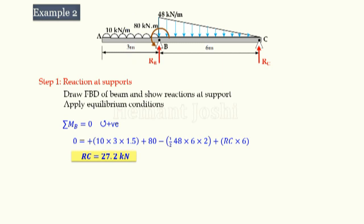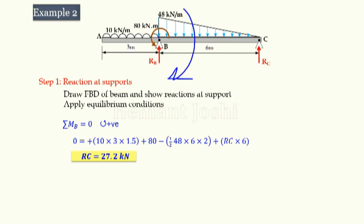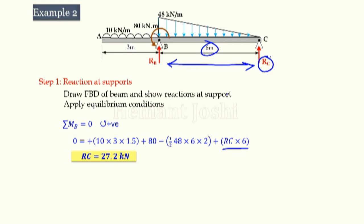Second is the couple of 80 kN·m, taken as positive because of its anticlockwise nature. Third is the triangular load (uniformly varying load). Total triangular load is taken as area of the triangle: 1/2 × intensity × distance. It acts at the centroid of the triangle, which is 1/3 of distance from the 90-degree end — so 1/3 of 6 = 2, meaning the distance is 2. The triangular load creates a clockwise moment about B, so sign is negative. RC × 6 is anticlockwise, so taken positive.